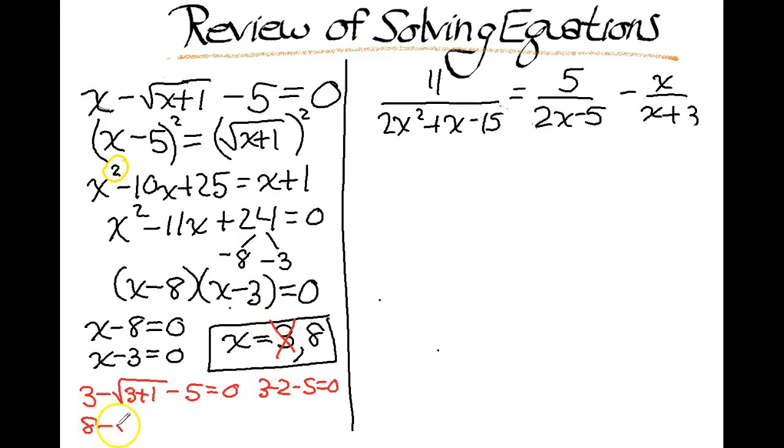Let's try 8. 8 minus the square root of 8 plus 1 minus 5 equals 0. 8 plus 1 is 9. The square root of 9 is 3. So does this one work? Yes, that one works. So we only have one solution here, and that is 8.